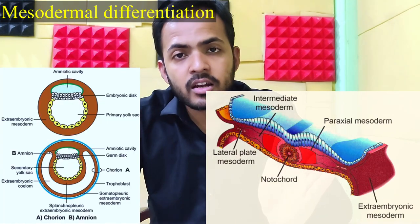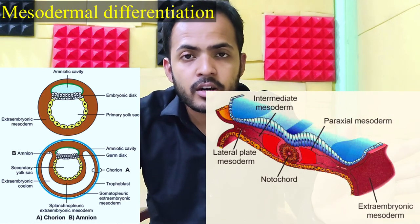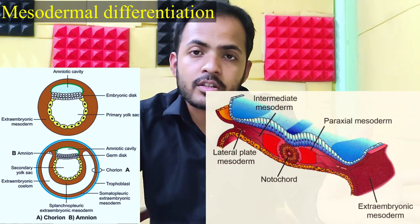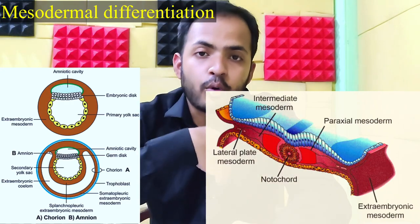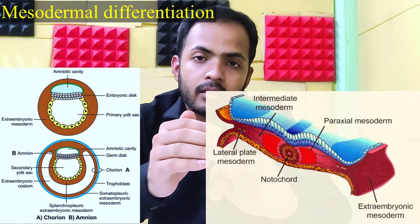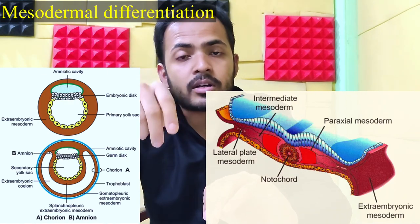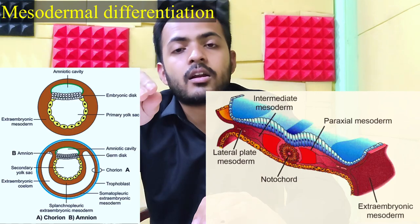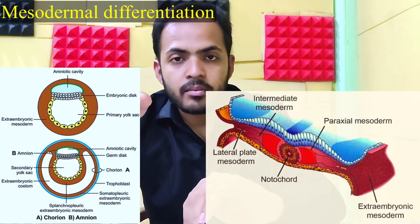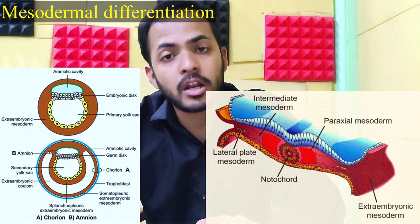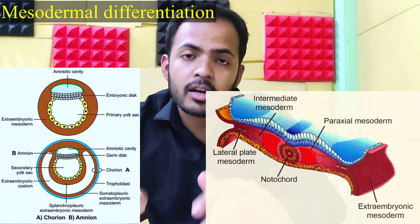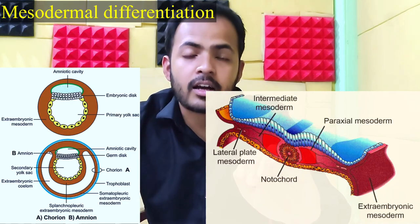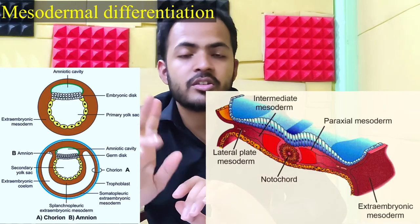The two parts of the lateral plate mesoderm are: the somatopleural layer, also known as the parietal layer, and the splanchnopleural layer, also known as the visceral layer. All organs that arise inside the body are covered by both visceral and parietal layers — lungs, liver, peritoneum, spleen, heart, and kidneys. From the somatopleural layer: dermis, pectoral girdle, pelvic girdle, and skeletal muscles of the upper and lower limbs arise. From the splanchnopleural layer: muscles of the heart, smooth muscles of the entire gut, and smooth muscles of the entire respiratory system arise.